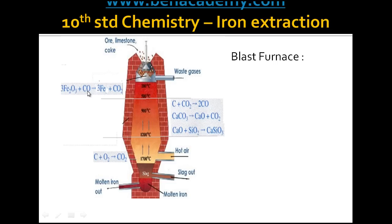When the carbon monoxide reaches the upper zone, it reduces the iron oxide from the iron ore into iron, and itself gets oxidized to carbon dioxide. So in the lower zone, carbon dioxide is produced; in the middle zone, it is converted into carbon monoxide and calcium silicate is formed; and in the upper zone, carbon monoxide reduces iron oxide into iron.